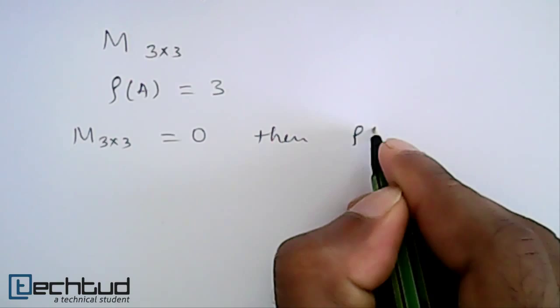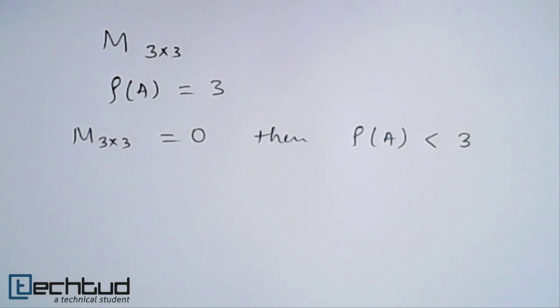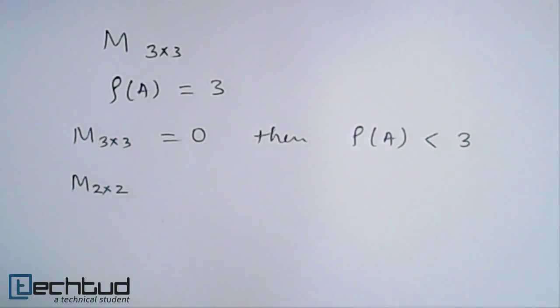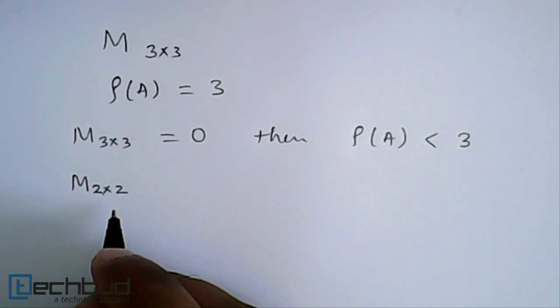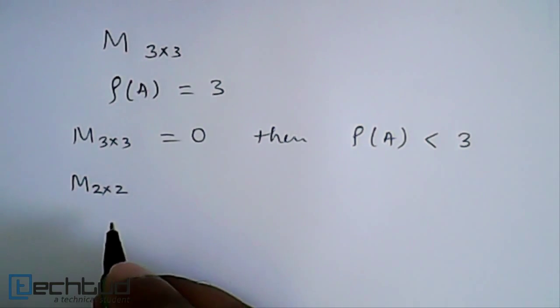Then, what we will do? We will check for all the possible combination of minors 2 by 2. We will try to find out if there exists a non-zero minor. So if there exists a non-zero minor of size 2 by 2, then we will say the rank is equal to 2.